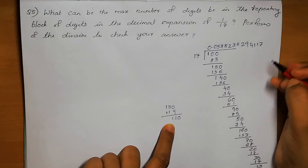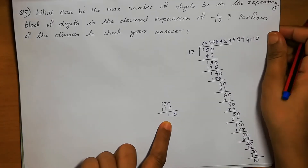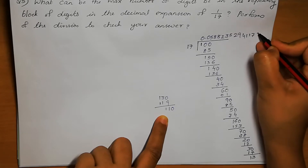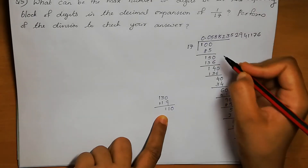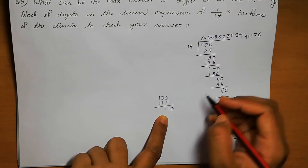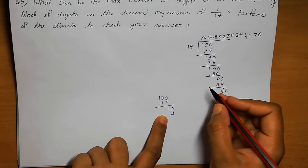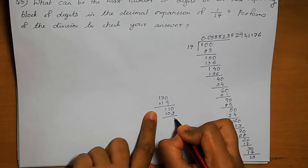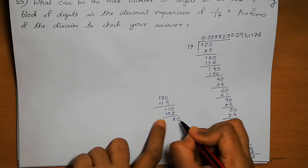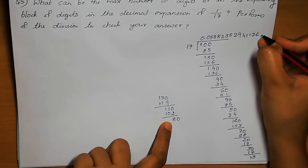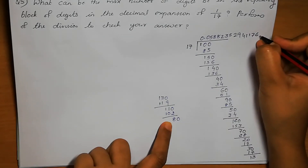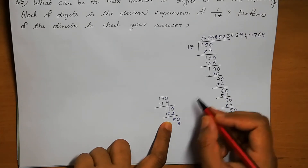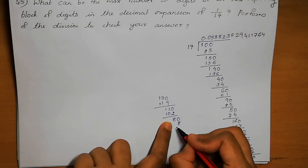110. How many times? 7, 6 times. 42, remainder 4. 6 plus 4 is 10. 10. 1. 0. 2. 8. 80. In 80, how many times? 7, 4 times. 28, remainder 2. Plus 2 is 6. 68.